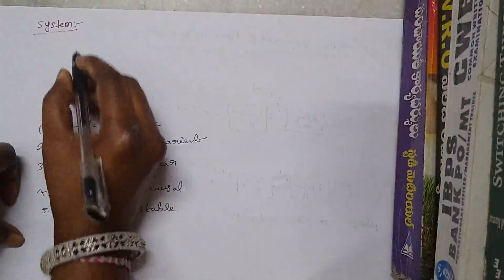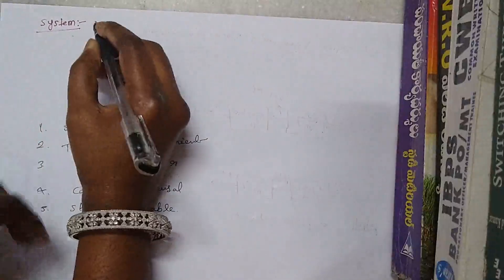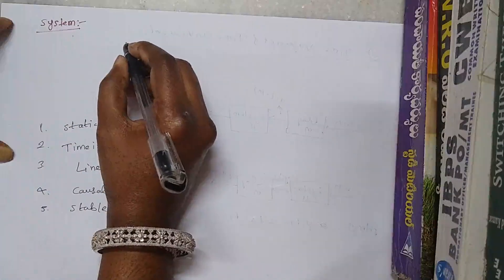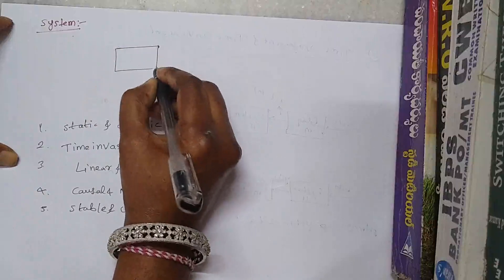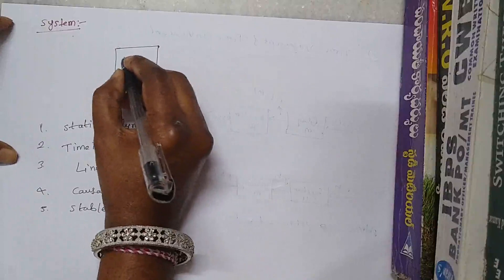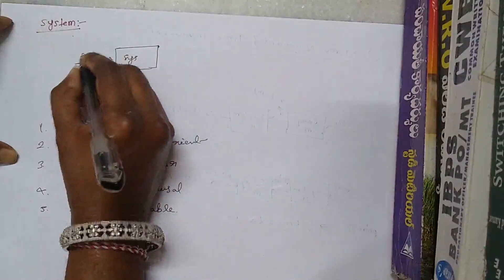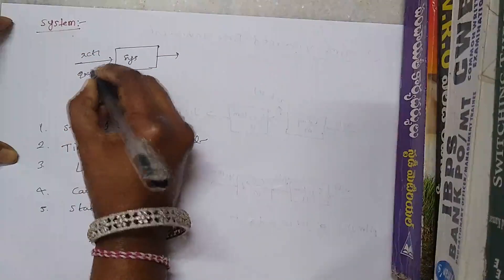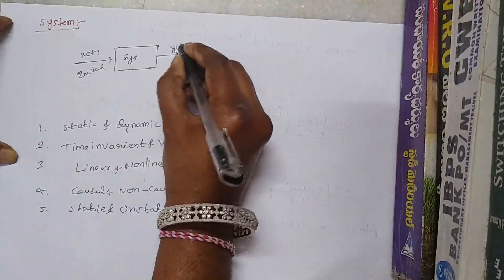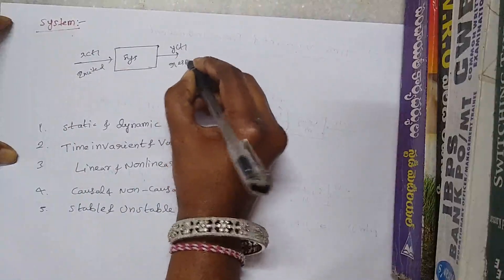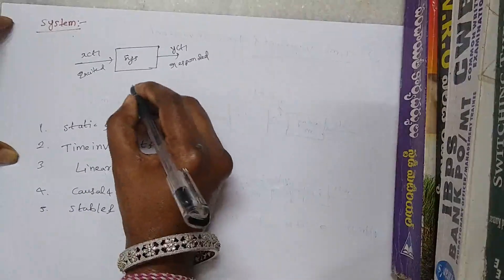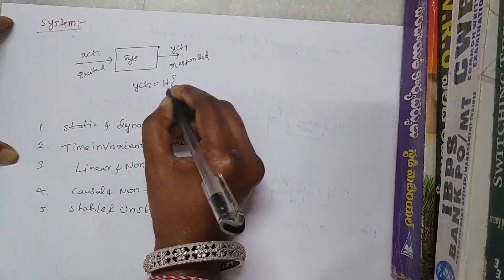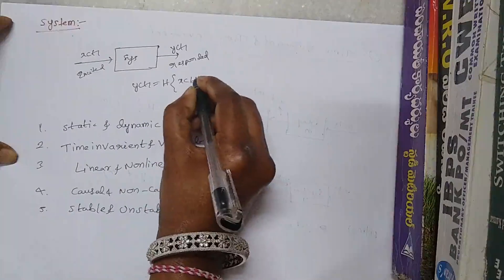Moving on to the next topic, which is systems. A system is defined as one which operates on or responds to a signal. The input signal is called the excited signal and the response of the system is called the responded signal. The mathematical representation is y(t) = H{x(t)}, where a system is generally represented by H.